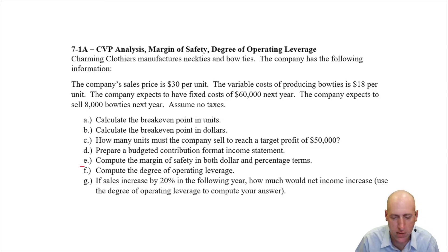Charming Clothiers manufactures neckties and bow ties. The company has the following information: The company's sales price is $30 per unit. The variable cost of making bow ties is $18 per unit. The company expects to have fixed costs of $60,000 next year. The company expects to sell 8,000 bow ties next year. Assume no taxes. Well, that makes our life a little easier. We will do future questions where we have some taxes to deal with. But for now, assume no taxes.